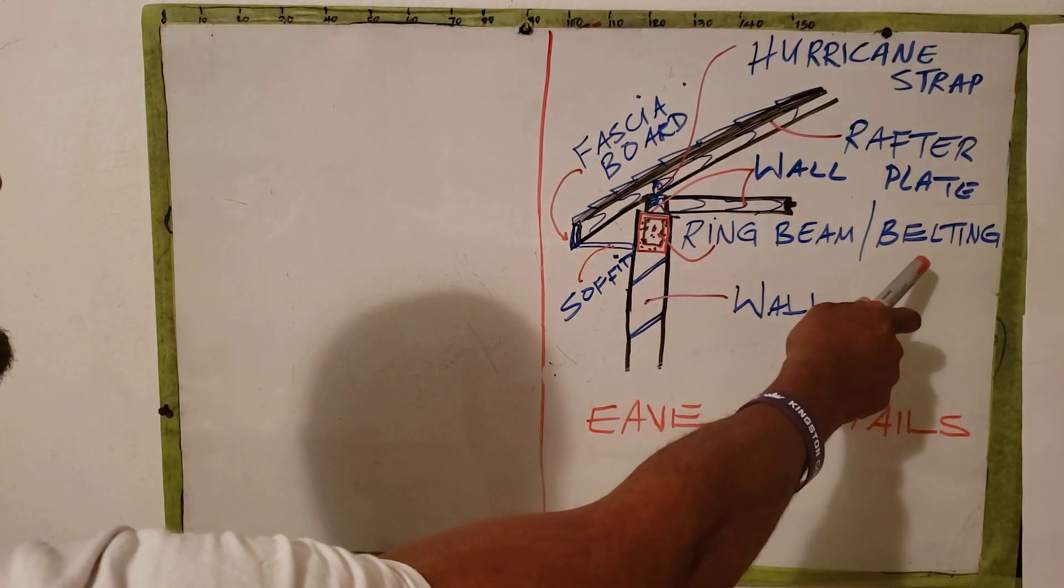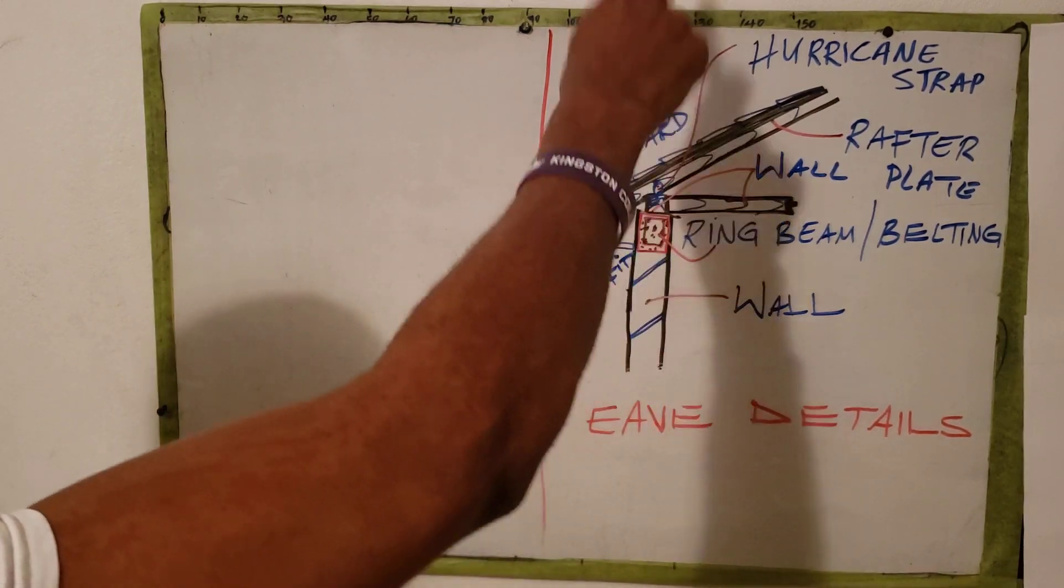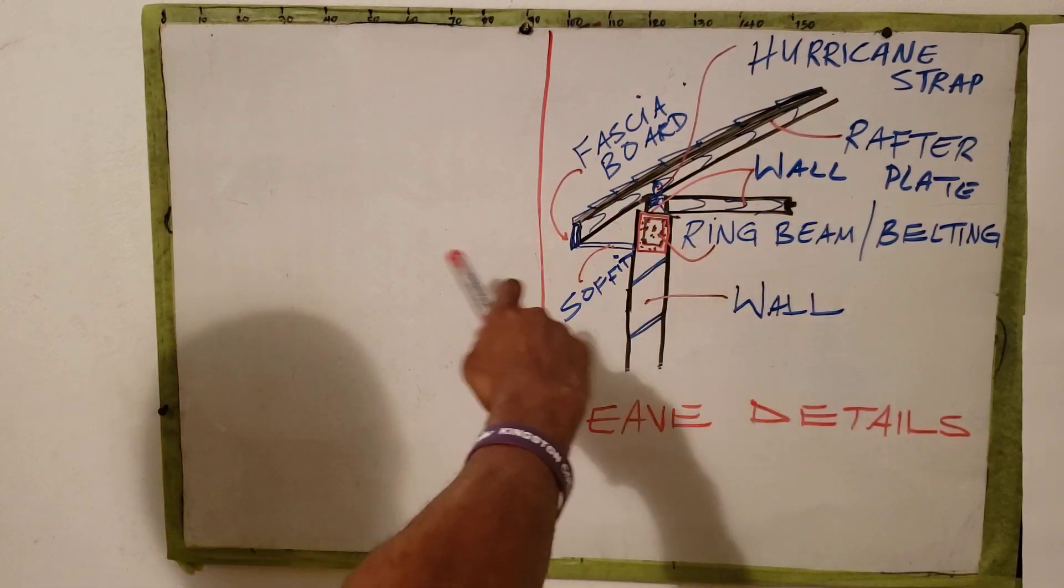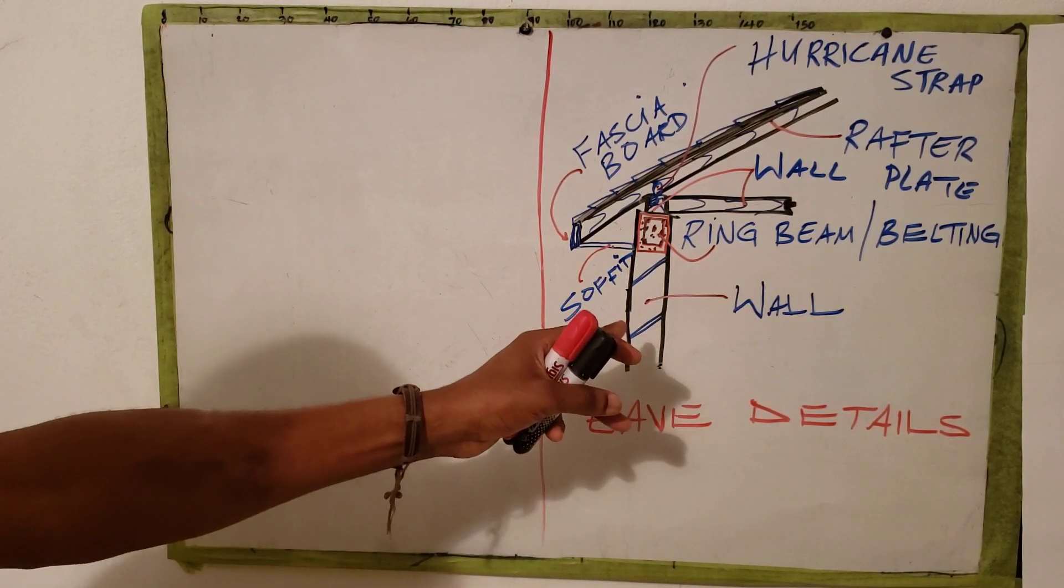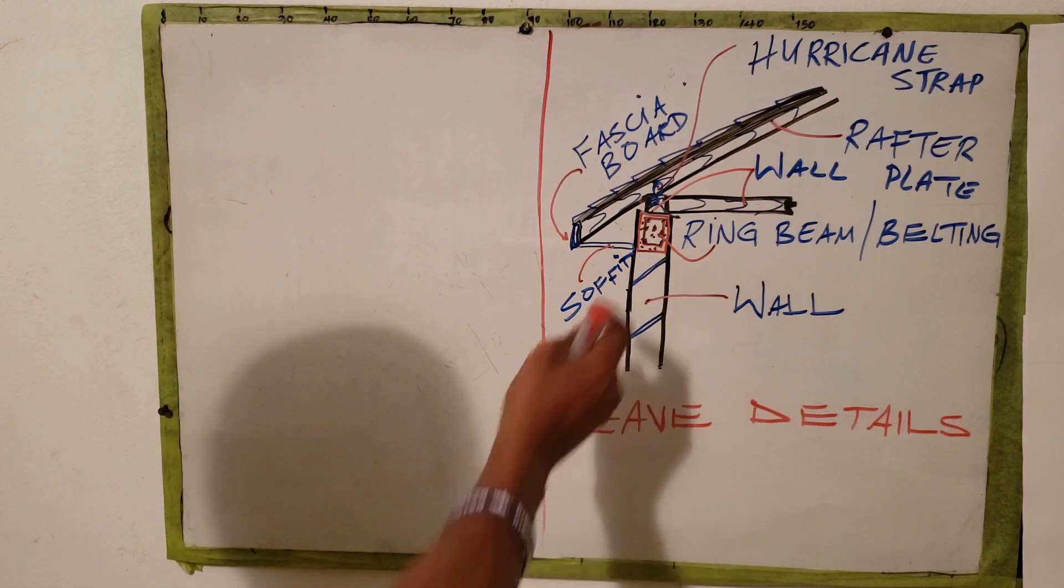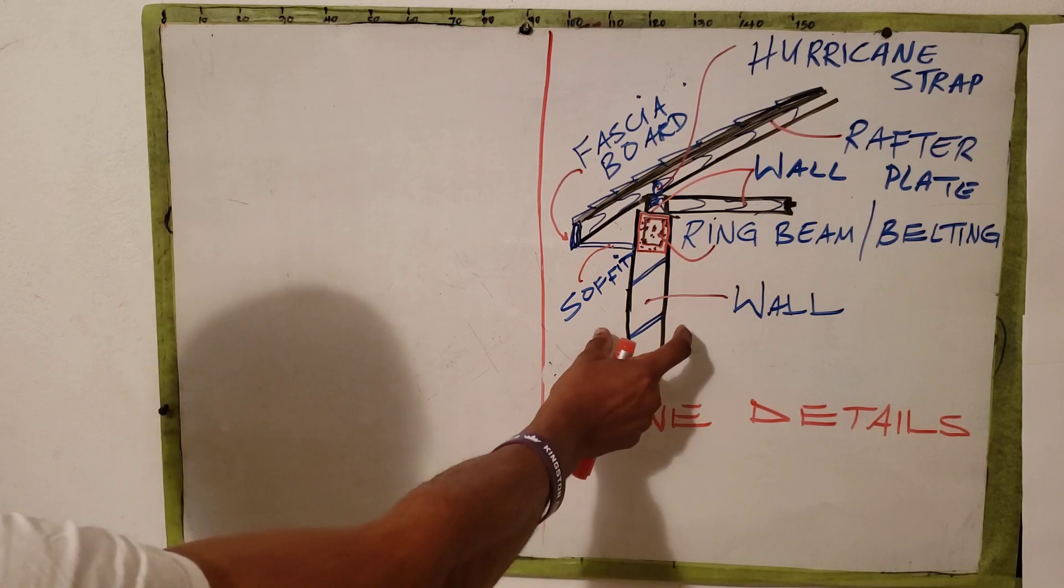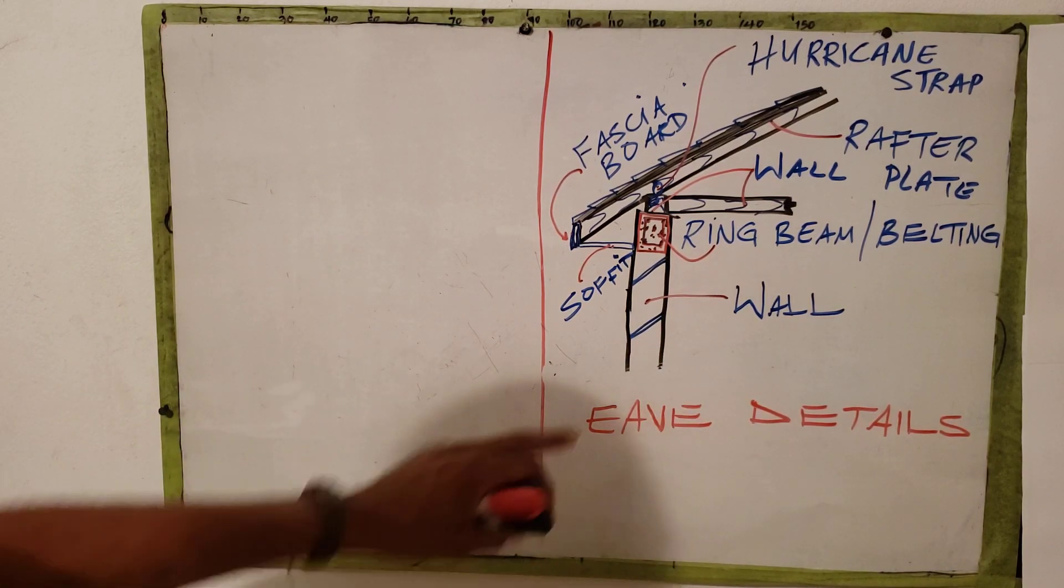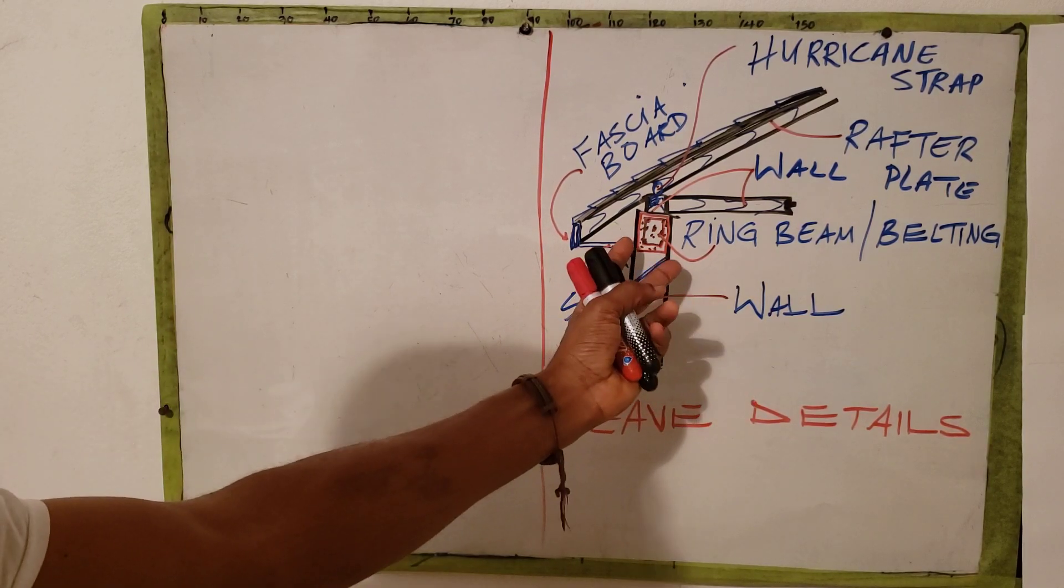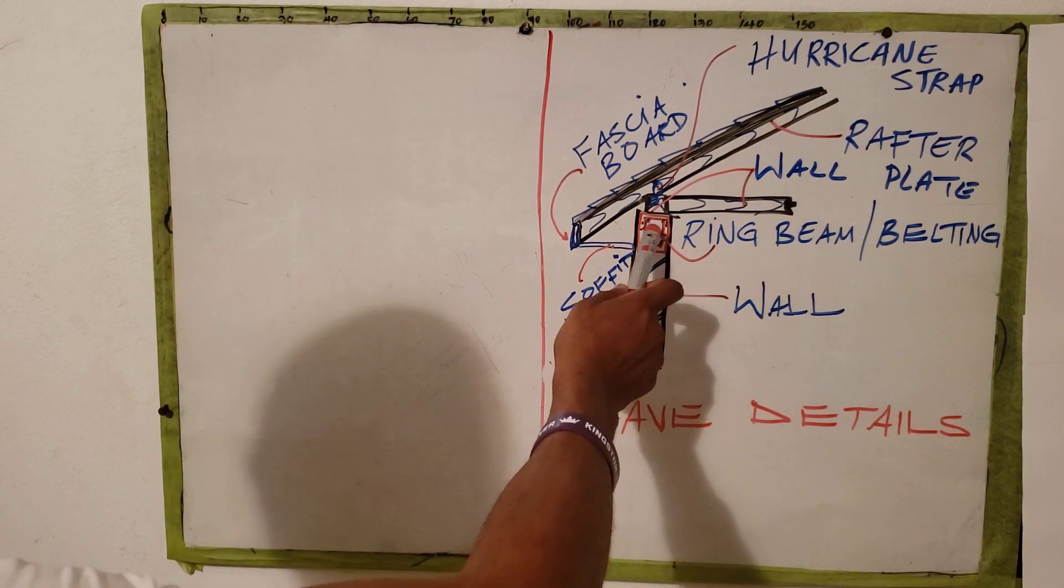You will also need to know the ring beam or belting is typically 300 high by 150 wide, or 150 by 300. The width basically, in most cases, matches the width of the wall. So if it's a case where the wall is 200 millimeters, the width would be 200 millimeters as well, but height is basically standard.